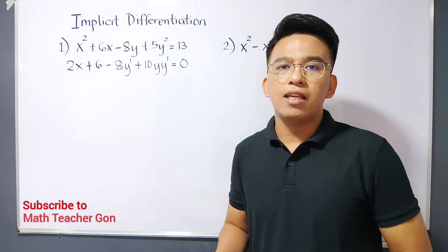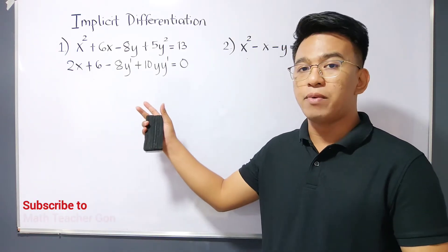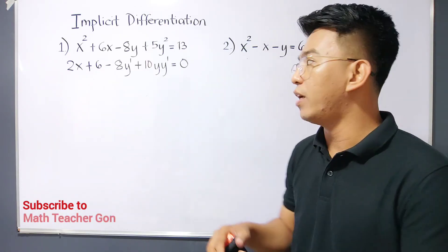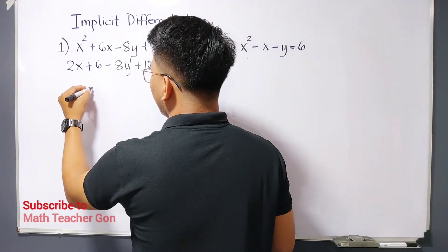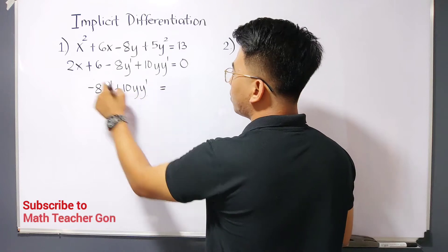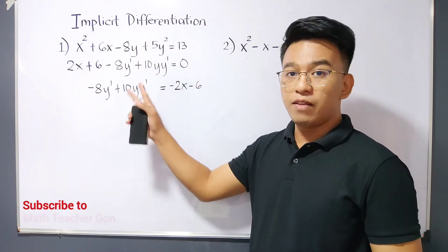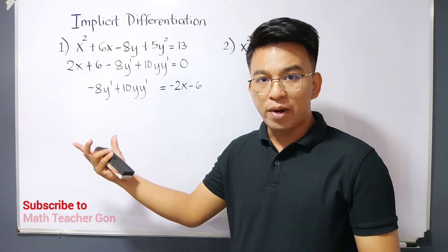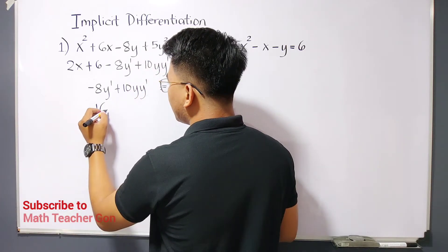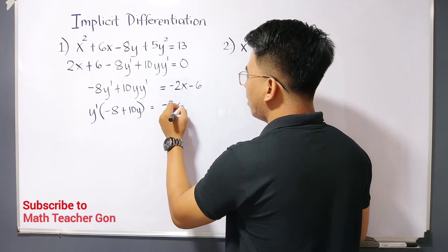The next target is to isolate the y prime, because that's the main goal of implicit differentiation. How are we going to isolate it? First thing you need to do is transpose 2x and 6 to the other side of the equation. It will become negative 8y prime plus 10y y prime equals negative 2x minus 6, since we transpose the following terms. We will factor out y prime.